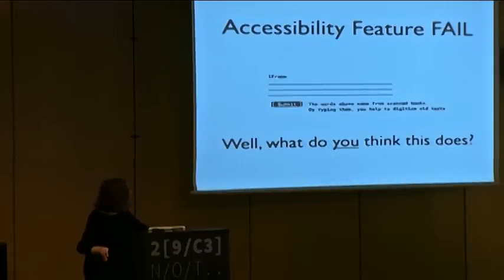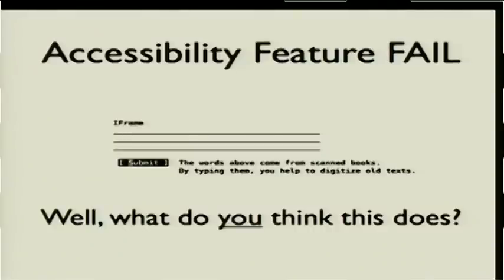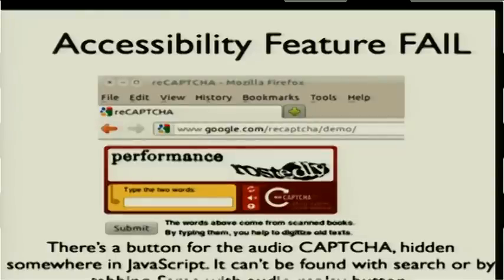Then there is the real world, and the real world is ugly. This is from the bottom of a conference talk submission page — this is read in links. I found this and I didn't know what it was, so I had to load this in the real browser. And it turned out to be a Google CAPTCHA, which is kind of interesting because you see the audio button there. So they implemented the accessibility feature — technically you can get to the audio CAPTCHA for this, but it's hidden in JavaScript. You can't search for it, you cannot tab to it. Apparently the same is true for the audio replay button.